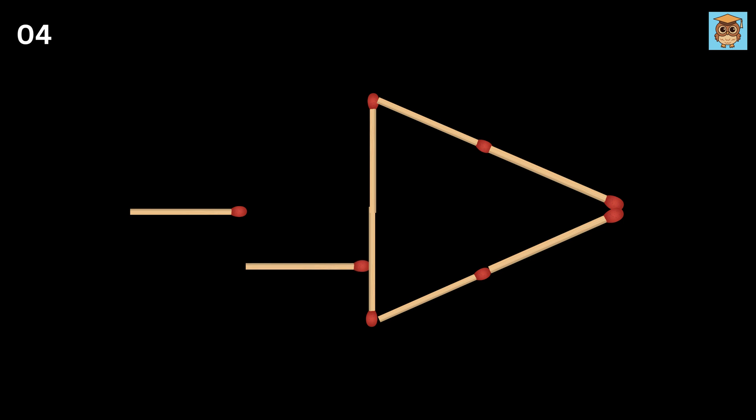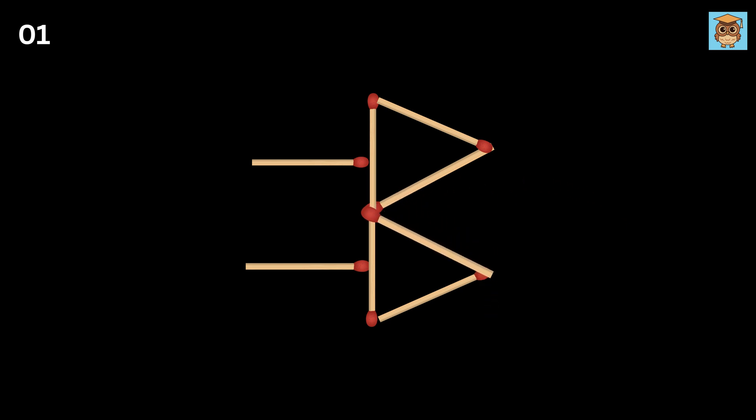First move this matchstick, and now we can move only three matchsticks. Next move this matchstick here, and now we can move only two matchsticks. Then move this matchstick here, and now we can move only one matchstick. Finally move this matchstick here, and we are done. We indeed get two arrows this way.